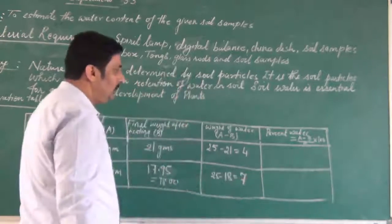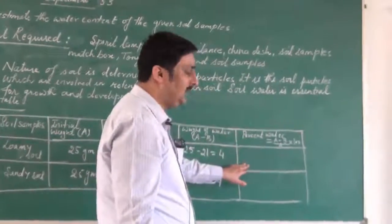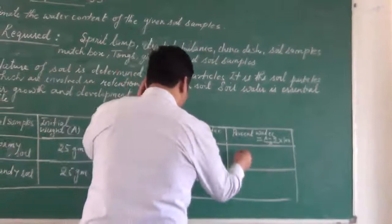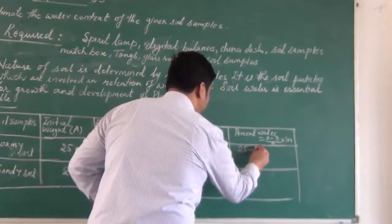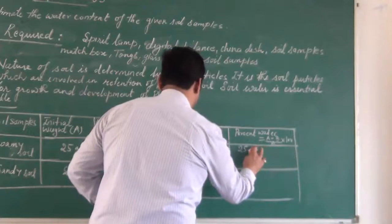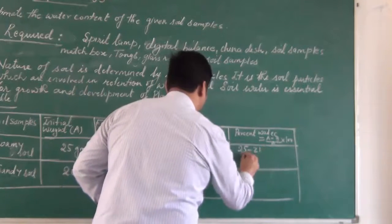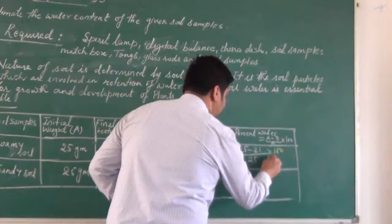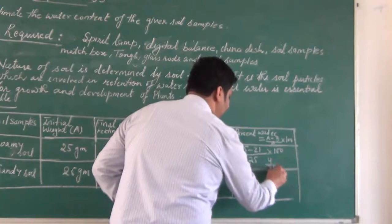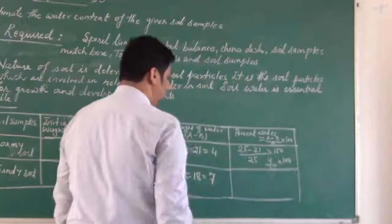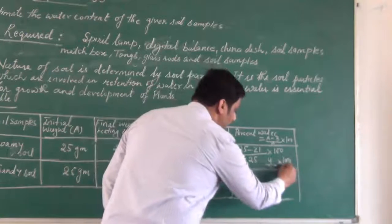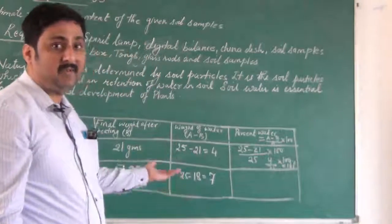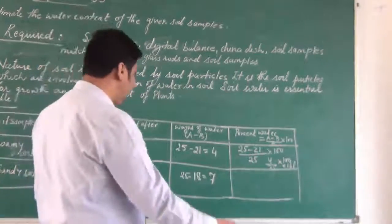Now you have to calculate percent of water that has been lost. A minus B upon A. That is 25 minus 21 upon 25 into 100. It comes out to be 16 percent. That means 16 percent water was present and that was lost.